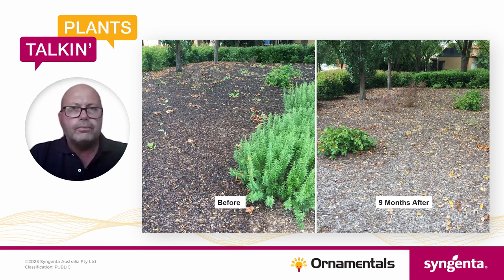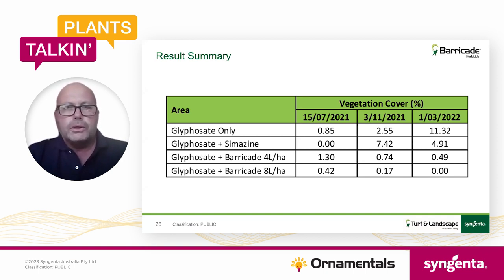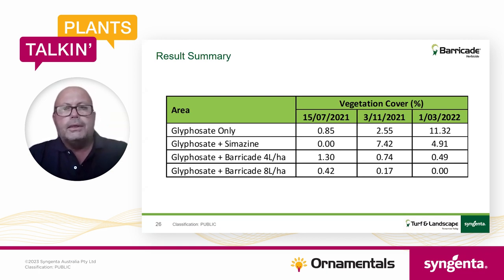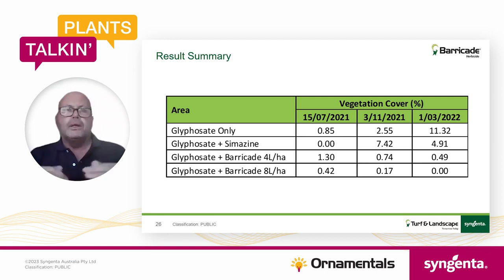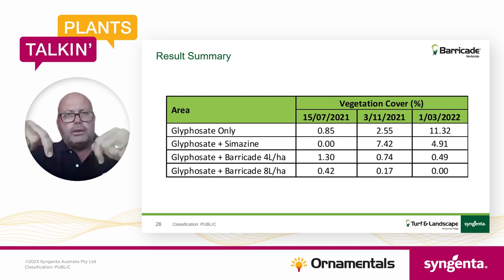As a summary of results in terms of vegetation cover — this was applied in May 2021 and we looked at it in March 2022. On average, looking at all the data for vegetation cover as a percentage, about 11 percent when just spraying straight glyphosate on its own. But when tank-mixing barricade with glyphosate, less than one percent of weed coverage at the four liter rate, and no weeds at all at the eight liter rate. Any weeds popping up in July or November are weeds being transferred in — blown in or carried in by birds or people — and as soon as they impact that layer of Barricade within the soil, they die.